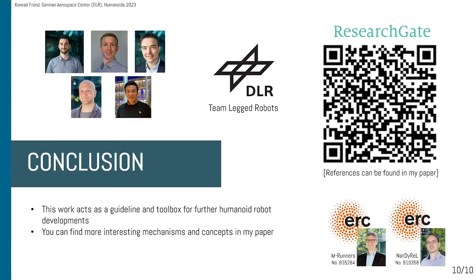To conclude, this work acts as a guideline and toolbox for further humanoid robot developments, enabling parameters for your optimization framework. You can find more interesting mechanisms and concepts in my paper, as well as in my last paper about oblique axes. The paper can be found on ResearchGate or IEEE Xplore. Thank you very much for your attention.